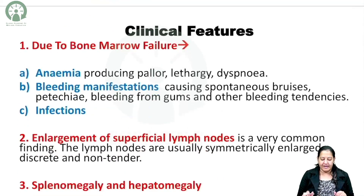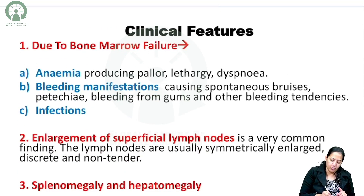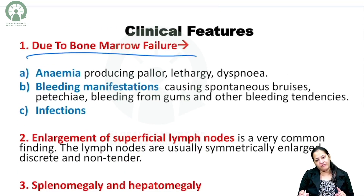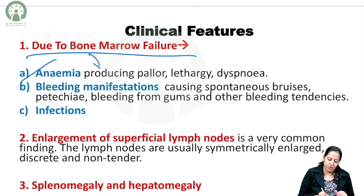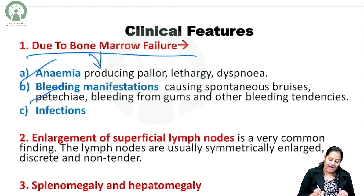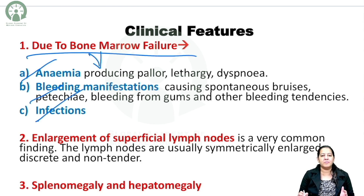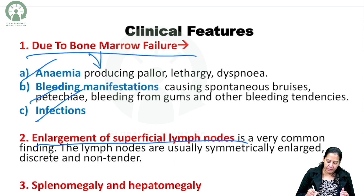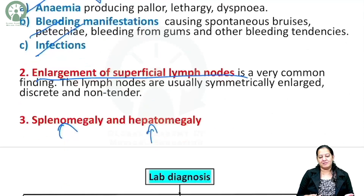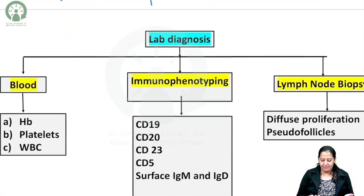The clinical features are due to marrow failure. There will be anemia due to decreased RBC synthesis. There can be bleeding disorders due to decreased platelet synthesis, that is thrombocytopenia. There can be increased chances of infection because the WBCs are non-functional. There can be enlargement of superficial lymph nodes, splenomegaly, and hepatomegaly — the spleen and liver size will be increased.